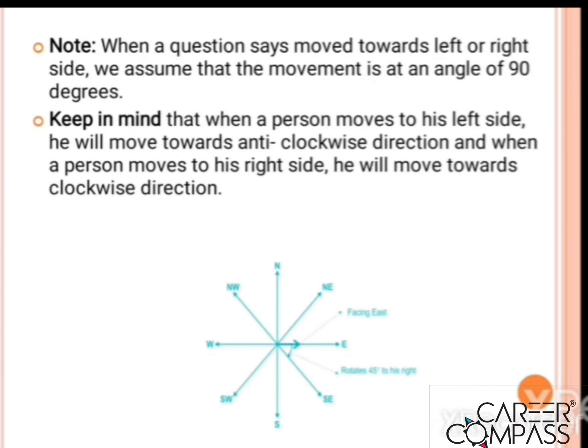When a question says move towards left or right side, it means a 90-degree movement. The examiner may say a person is walking in the North direction and then turns to his left - that automatically means turning 90 degrees to the West side. This is a very important point to keep in mind.